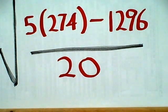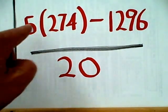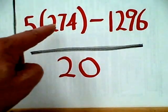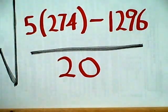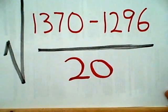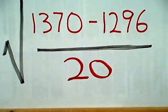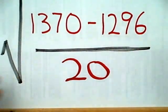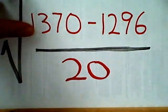We've already calculated our denominator of 20. Now, let's work on the numerator. Let's take 5 times 274. Well, that's 1370. Now, let's take the 1370 minus 1296. That is going to be 74.